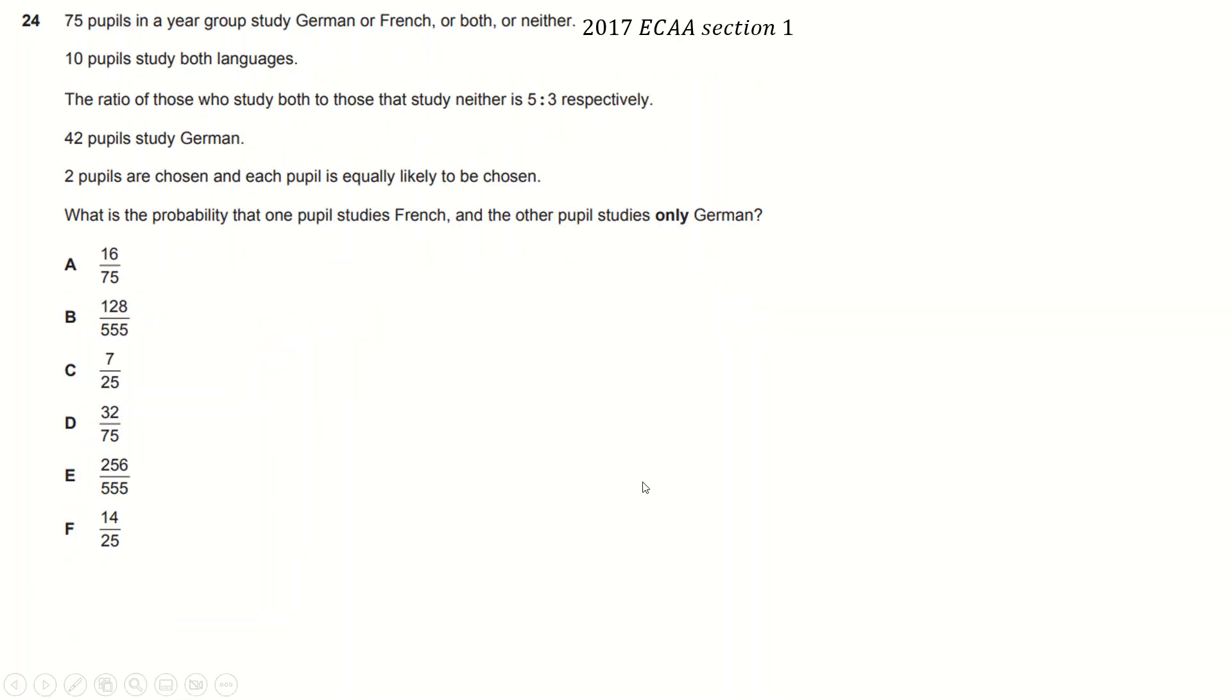I think I've got a couple more questions coming up. This question, I don't know whether it's because I teach a lot of GCSE maths, but as soon as I looked at this question, it was like Venn diagram time. So I drew a Venn diagram. German and French, 10, so you both, bang it in there. Ratio of, so both to neither is 5 to 3. So 10 divided by 5 is 2 times by 3 is 6. So neither do, so 6 do neither. 42 studied German, already got 10 of them, so that's 32 there.